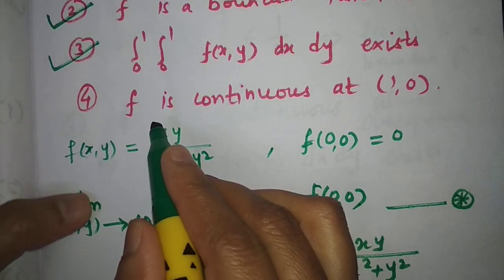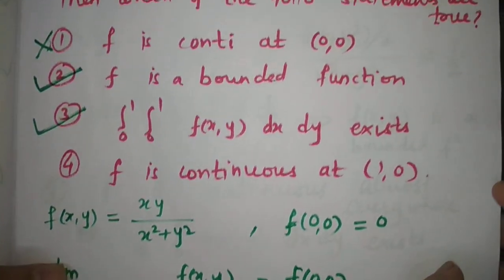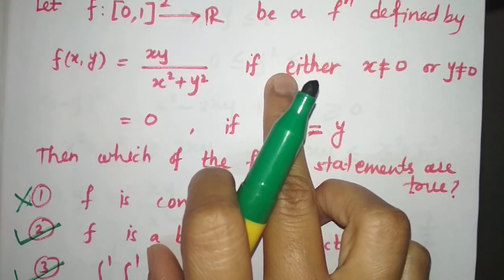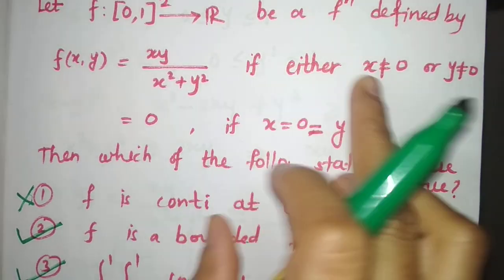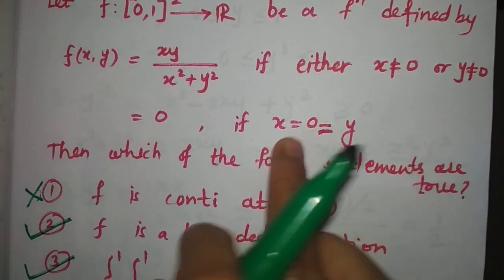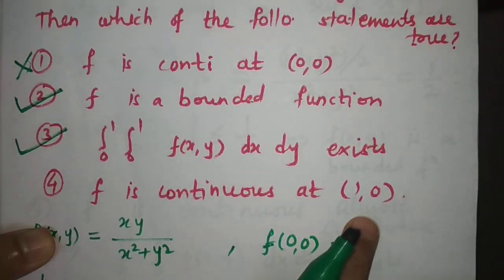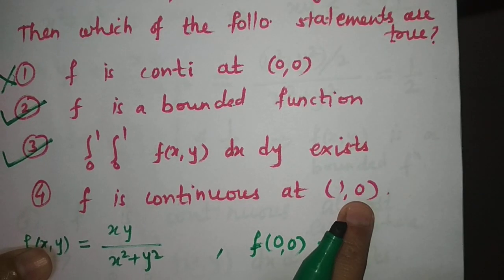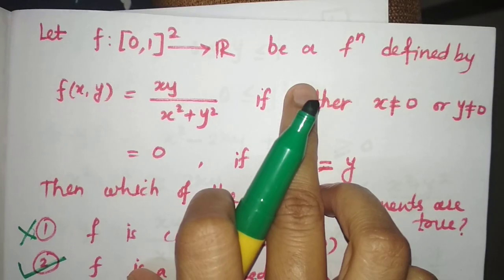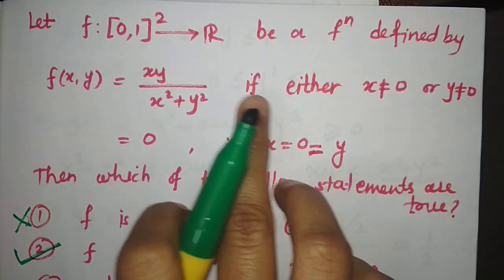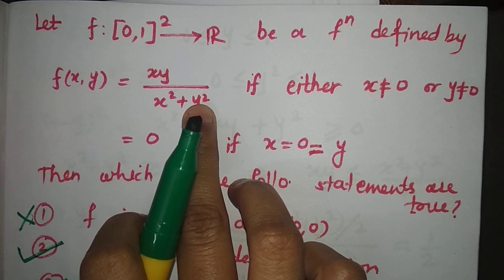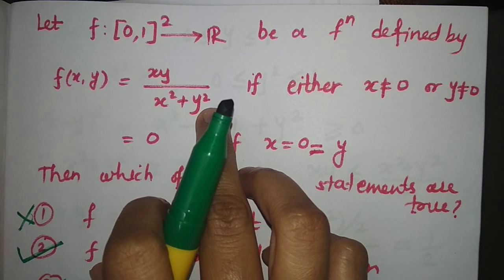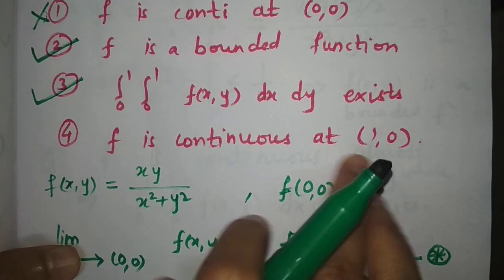The fourth option asks whether f is continuous at (1, 0). The point (1, 0) has x = 1 ≠ 0, so it falls in the case where either x or y is non-zero. At such points, f(x,y) = xy/(x² + y²) is a quotient of polynomials with non-zero denominator, so it is continuous there. Hence f is continuous at (1, 0), and the fourth option is correct.